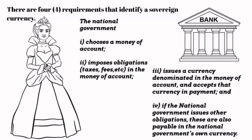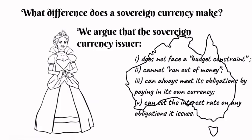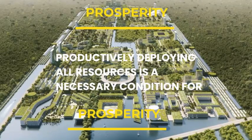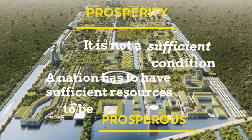Previously on Modern Money, we looked at the four features of a sovereign currency and the four benefits of a sovereign currency. We learned the key to prosperity are the real resources a nation can access, such as land, equipment, skills of its people, and natural resources. Productively employing all those resources is necessary for prosperity, but it is not a sufficient condition — a nation also has to have sufficient resources to be prosperous.